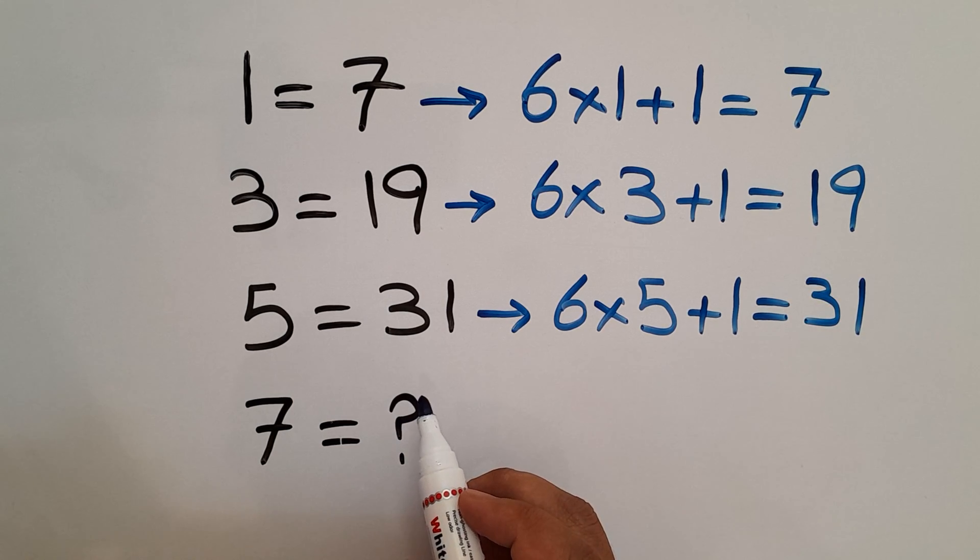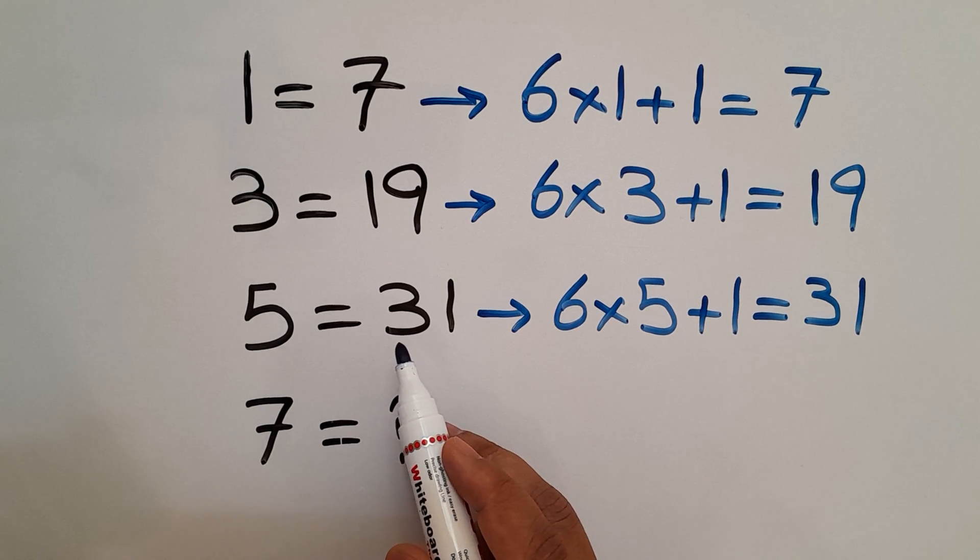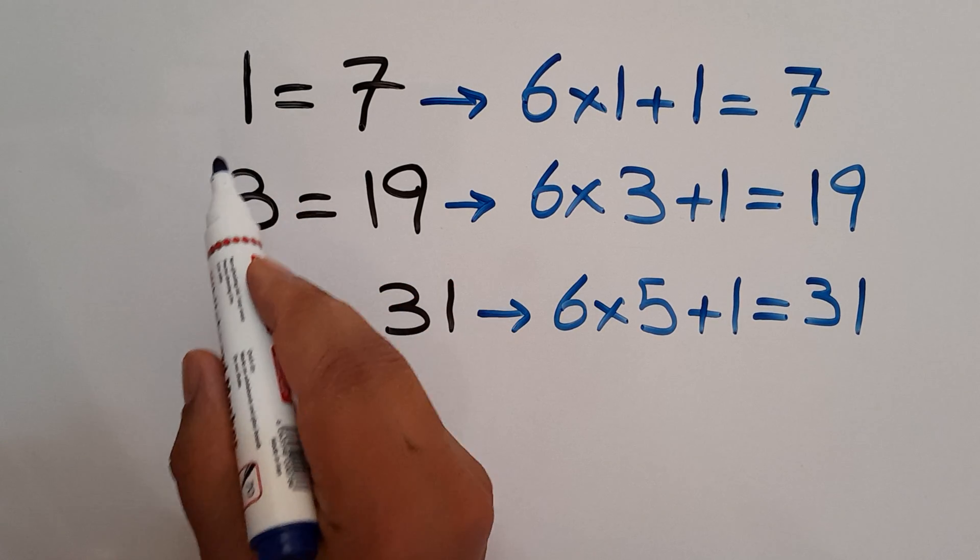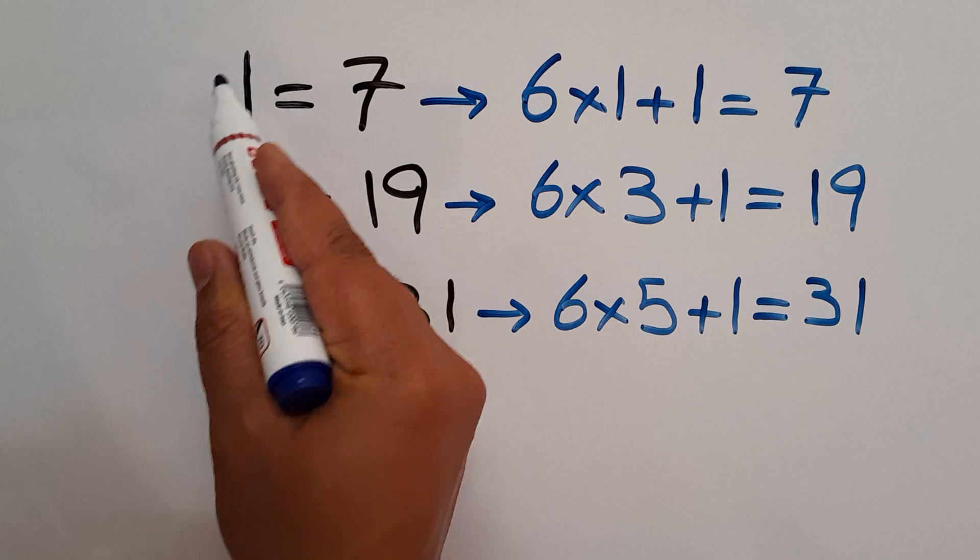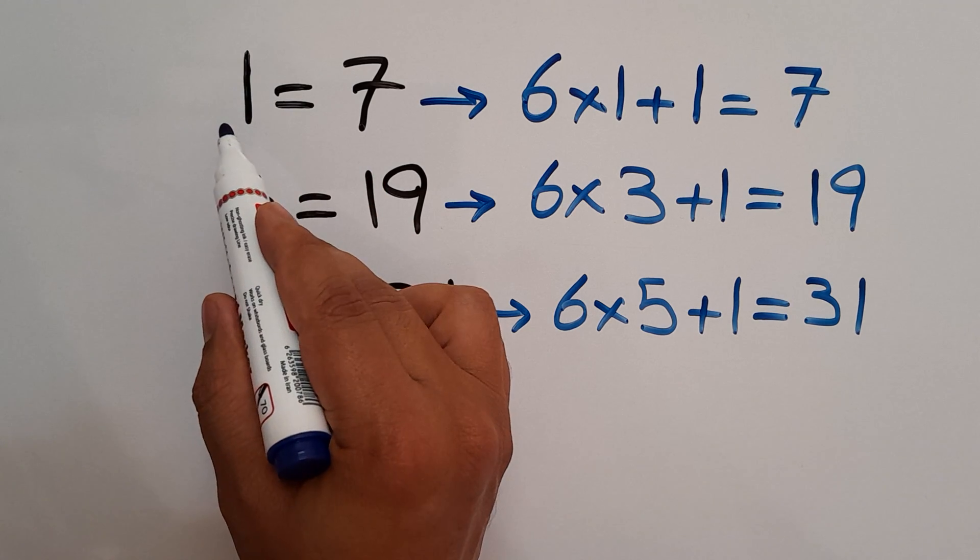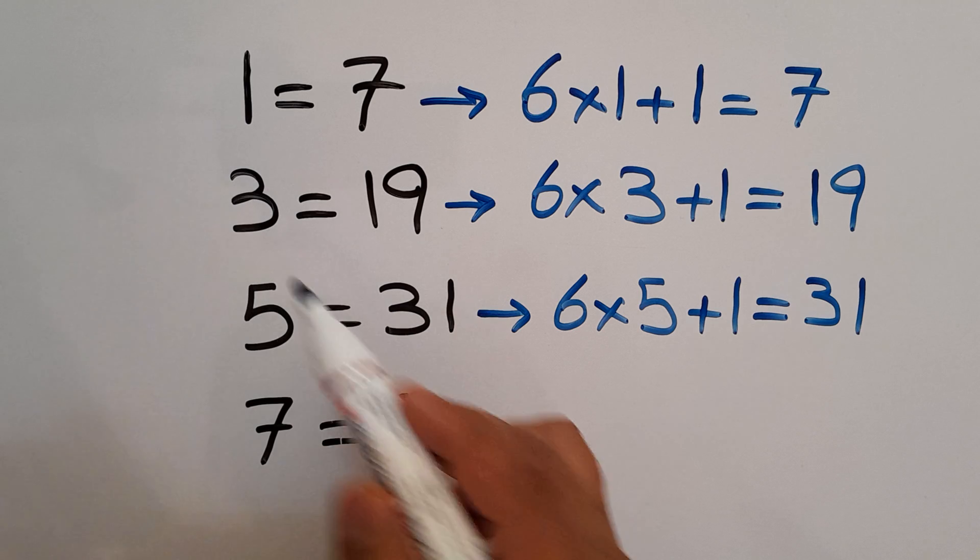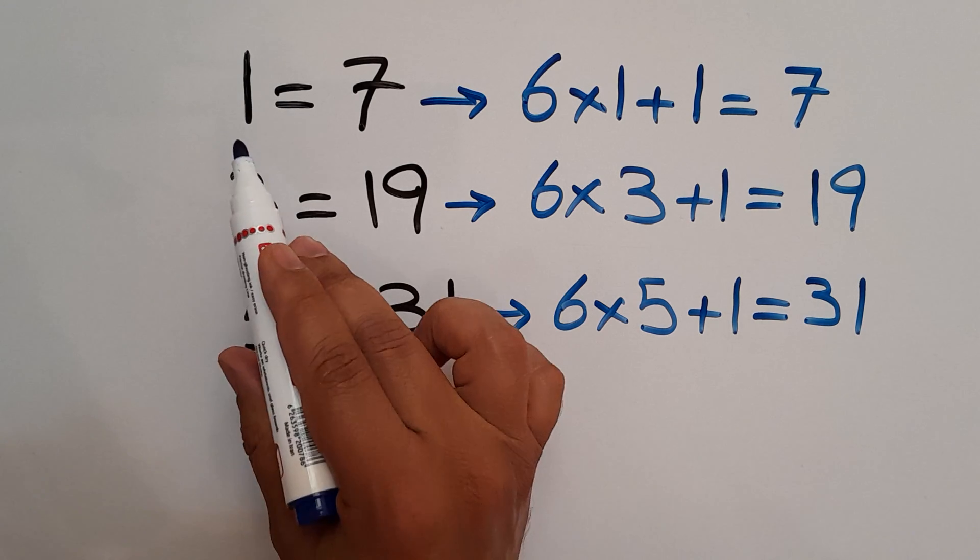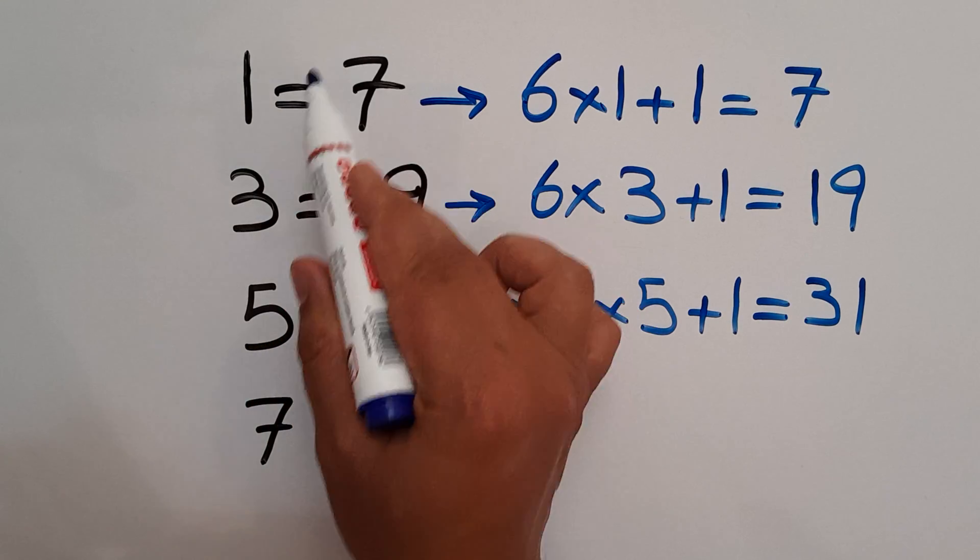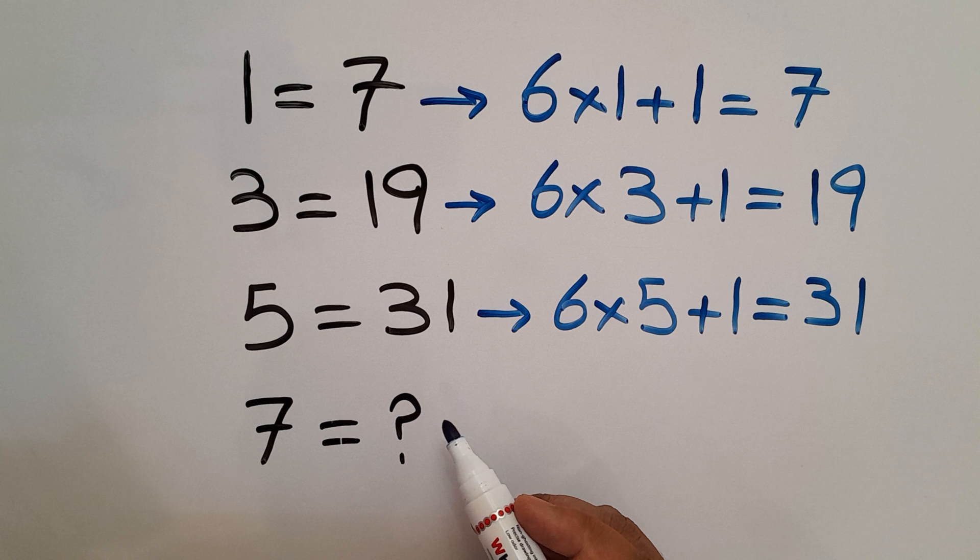So therefore the pattern that exists here is 6 multiplied by the left hand side plus 1 gives us the right hand side number. Okay, now let's use this pattern to calculate the missing number.